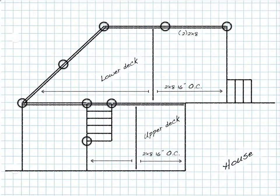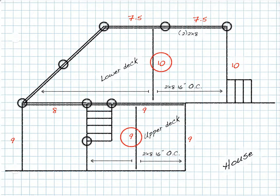Let's go to an example deck design and look at how we would size the joists on the deck. If we put all the dimensions on the plans, we have a 10-foot joist span and a 9-foot joist span, and these joists are not cantilevering beyond their beams.